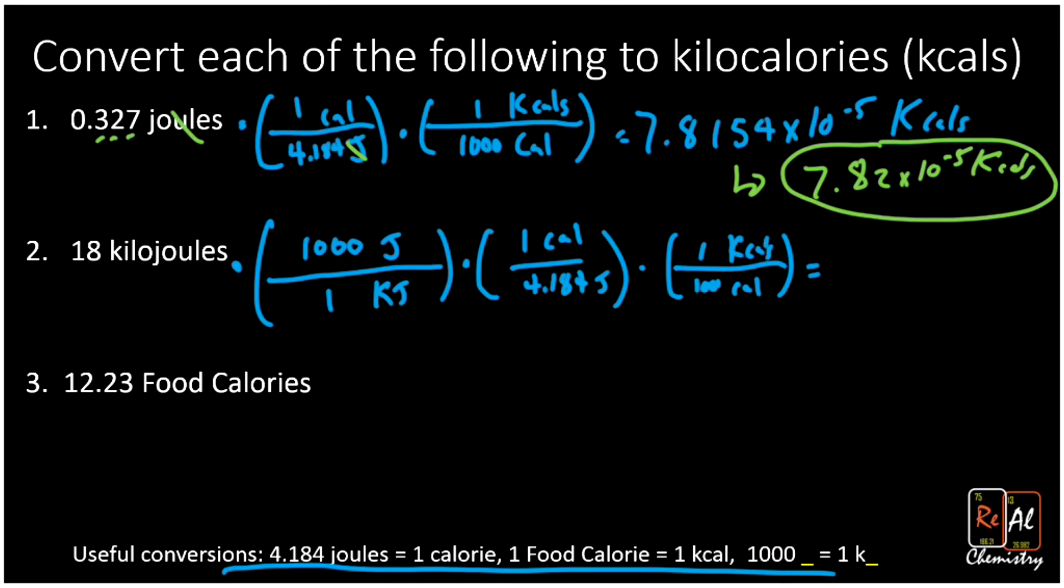So then I'm going to take 18, multiply by a thousand, divide by 4.184, and then divide by a thousand, and I get 4.3021 kcals. Again, we're going to round for sig figs. Here we want two sig figs, so that's going to give me just 4.3 kcals.